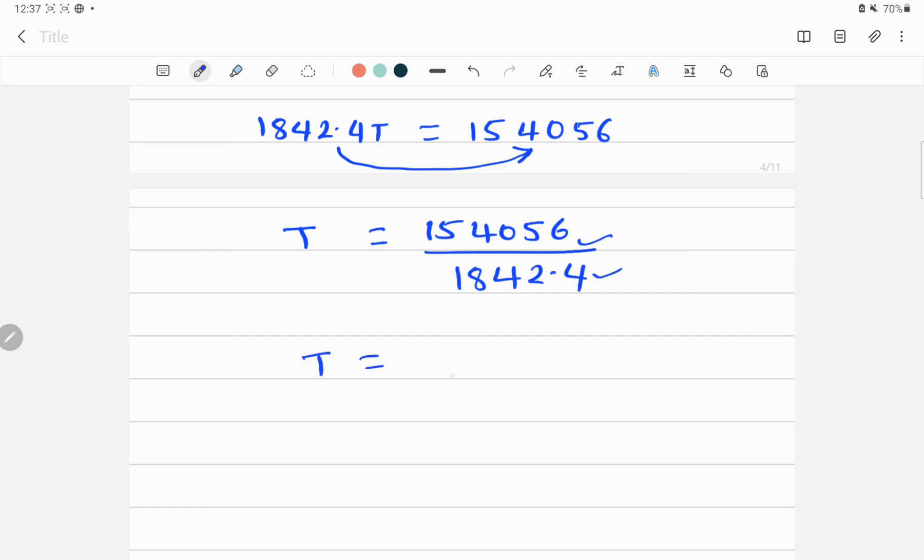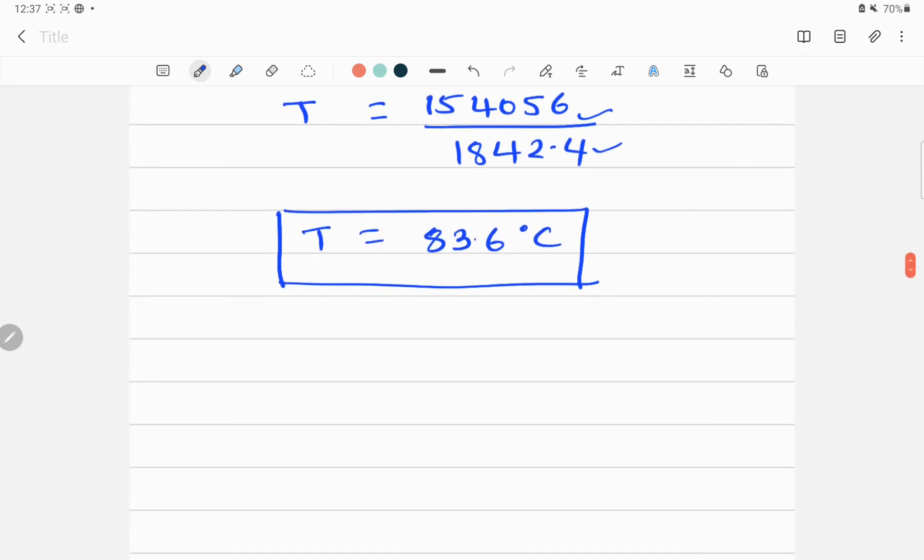So if I divide this number by this one, I will get the final temperature of this system which is 83.6 degrees Celsius. So this is, if I round it off, this temperature is equivalent to 84 degrees Celsius, which is the final temperature of the glass-water system.